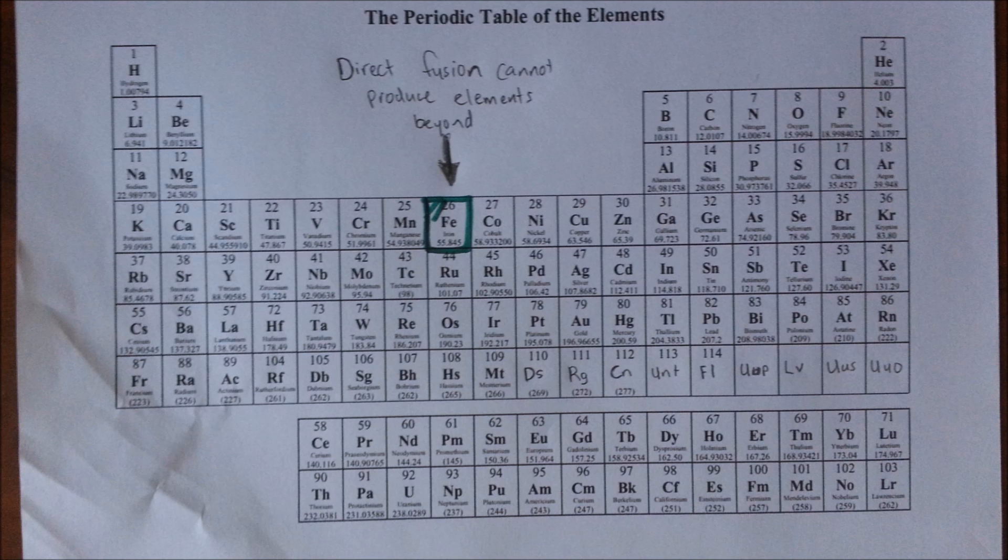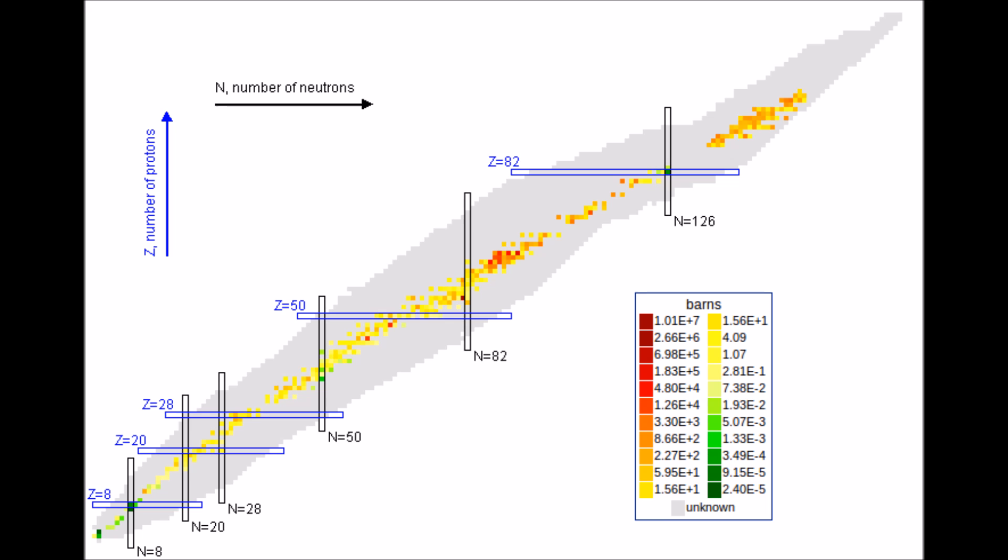So, where do the other 60 plus elements after iron come from? This happens in a process called neutron capture. Free neutrons are able to fuse with some of the heaviest nuclei.